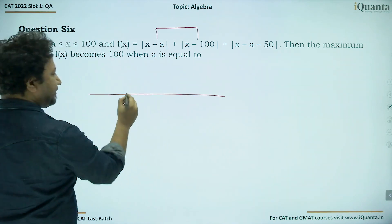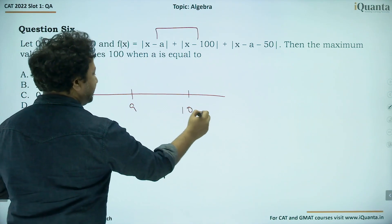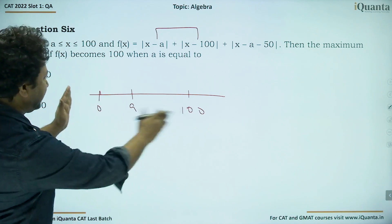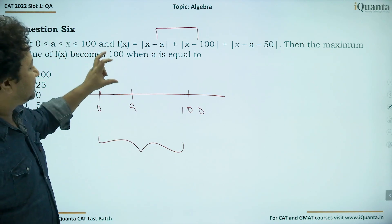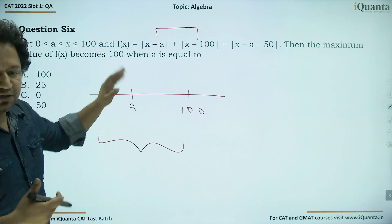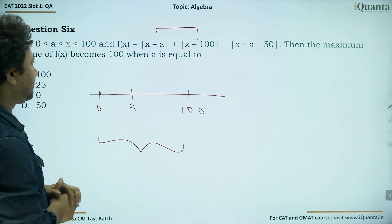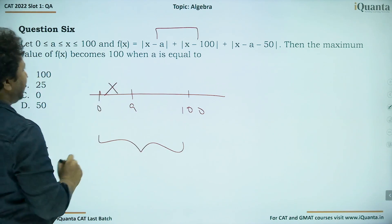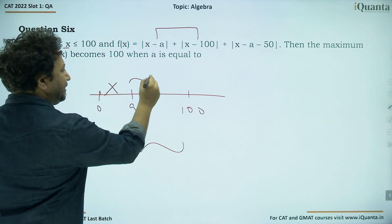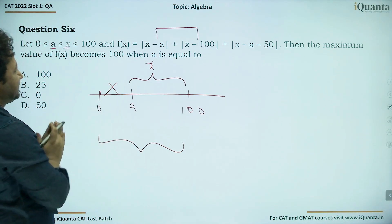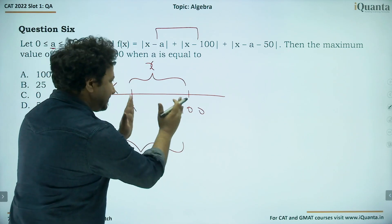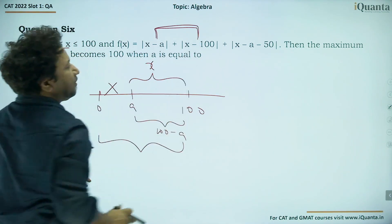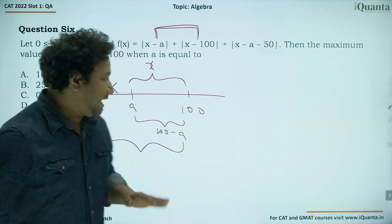Mark the critical points: a and 100 on the number line. Since x must satisfy a ≤ x ≤ 100, x lies only in this interval. The distance of x from a plus the distance from 100 always equals 100 − a, which is independent of x. So combining |x − a| + |x − 100| = 100 − a for all valid x.